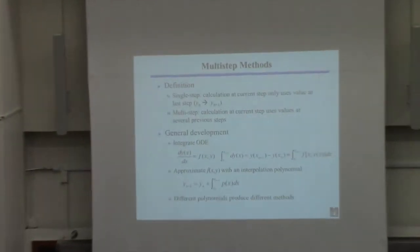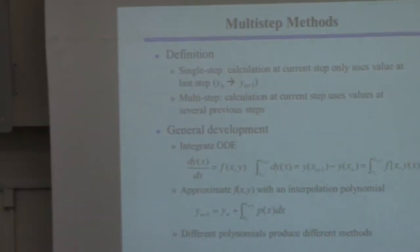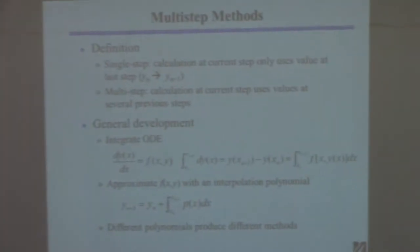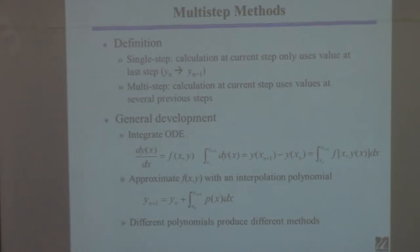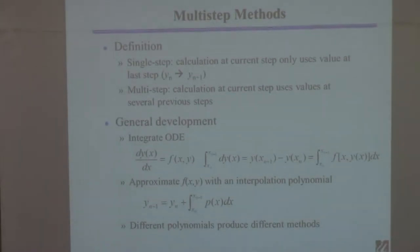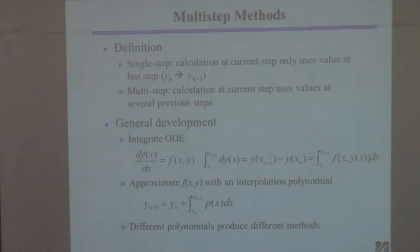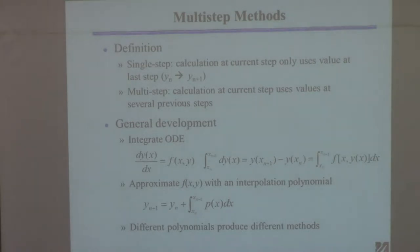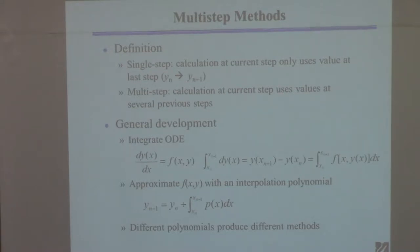A multi-step method uses more than one previous value to find the current value. For example, you might have a method that computes y_{n+1} using knowledge of y_n and y_{n-1}, which was the iteration before the last iteration. Those are called multi-step methods.